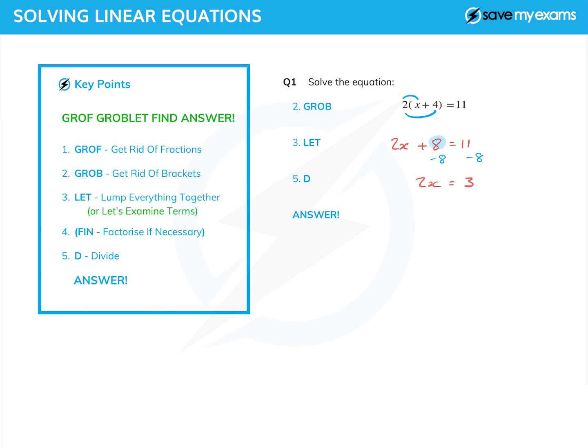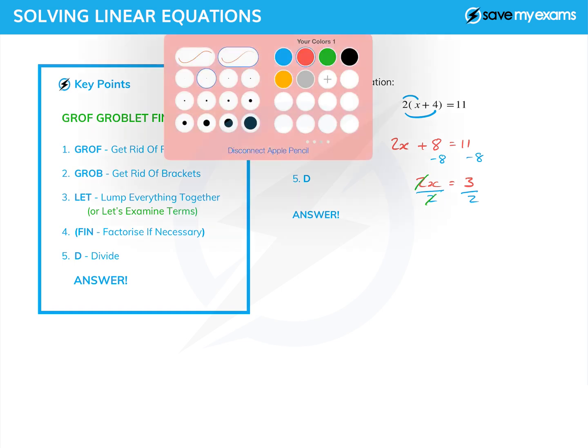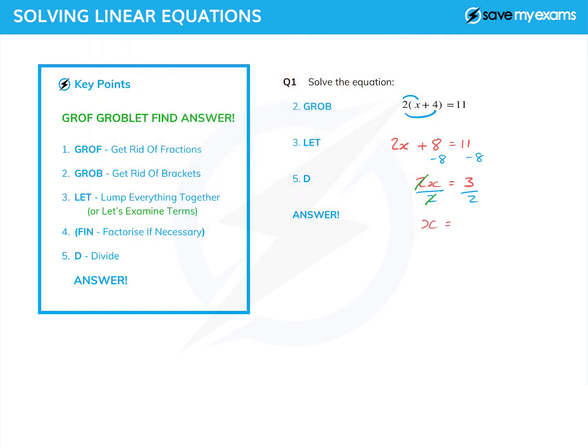Where did the 8 on the left hand side go? Well 8 minus 8 is 0 so it disappeared. And now I need to get the x on its own which I do by dividing, so I divide by 2 to get the x on its own and that has the effect of, well the 2s on the left cancel and my answer is x equals 3 over 2 or 1.5 if you'd rather, but 3 over 2 will do.